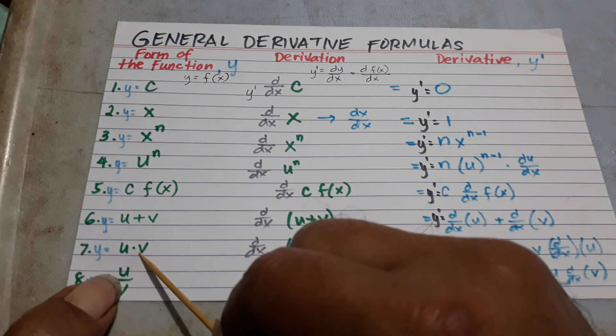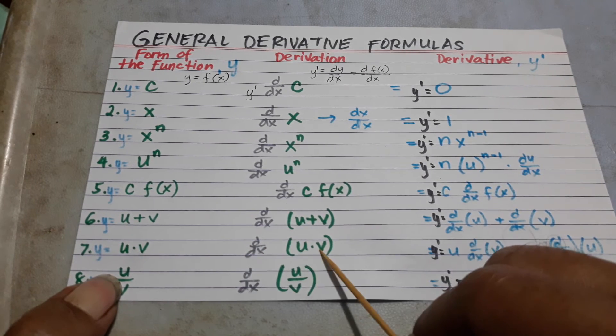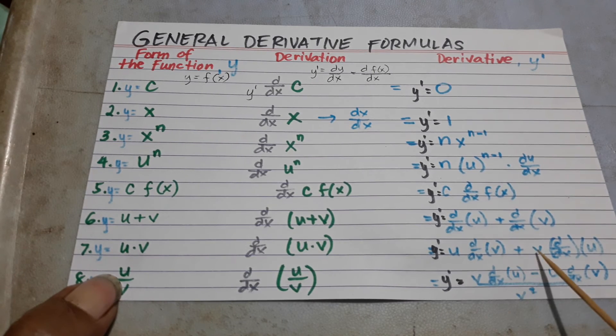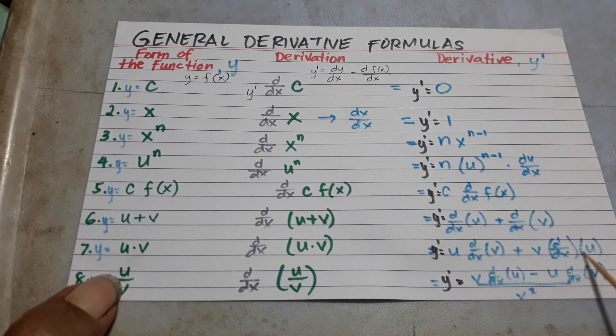The derivative of u times v is u times the derivative of v plus v times the derivative of u.